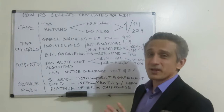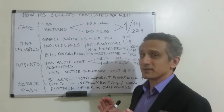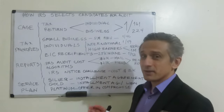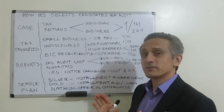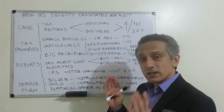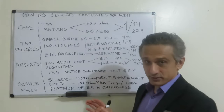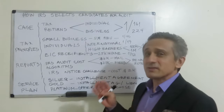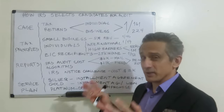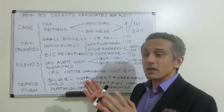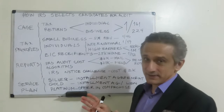There is a case for the IRS creating a specific statistical system that uses algorithms with the objective of selecting people or companies for auditing. This statistical system has been updated — or is updated — every year once tax returns are received.